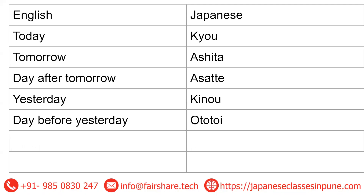Another important list: today in Japanese is 'kyo,' because if we want to say what day it is today, we need these words. Today is 'kyo,' tomorrow is 'ashita' — note it's written as ashita but pronounced 'ashita,' not 'ashita.' Day after tomorrow is 'asatte.' Yesterday is 'kino.' Day before yesterday is 'ototoi.'